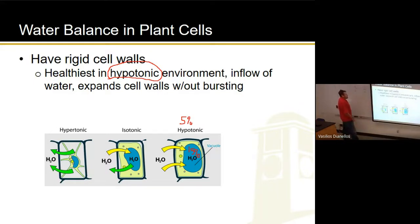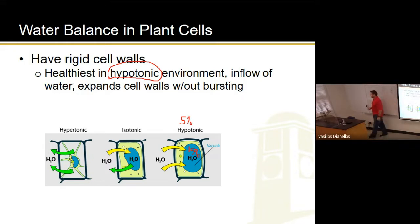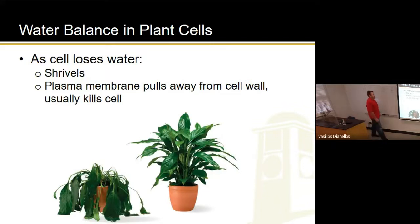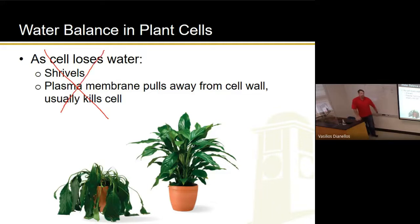Plant cells prefer a hypotonic environment — if the outside is 5% and the cell is 15%, water is going to want to come in to equalize things. Isotonic isn't that bad for plants; they're still living, but the cell isn't rigid. You've ever seen a plant that's all floppy because it hasn't been watered? That's what that is at first. But if you don't water it long enough, it becomes hypertonic, all the water's gone, and it dies. Hypotonic is the preference — that's what you need to know for the exam.